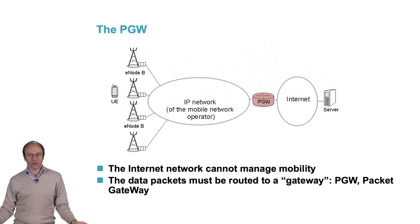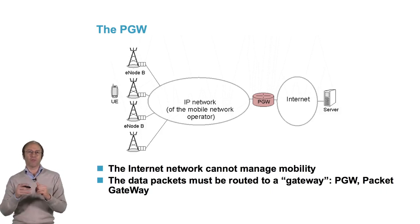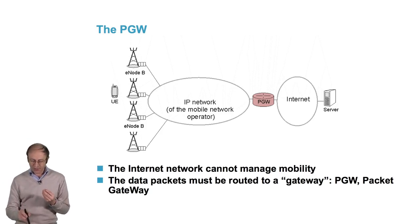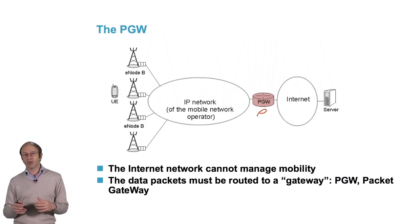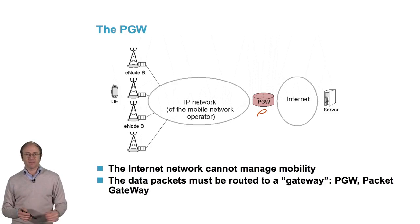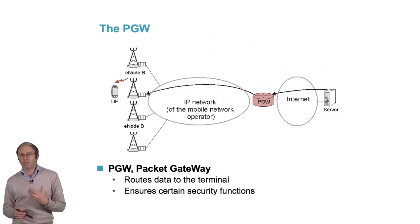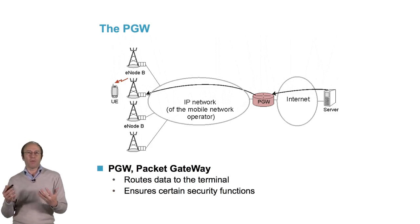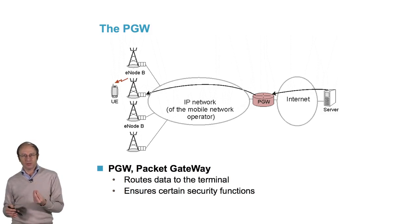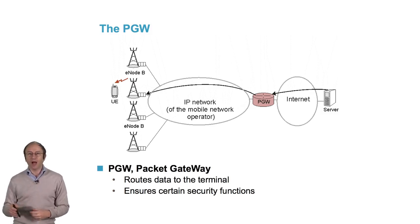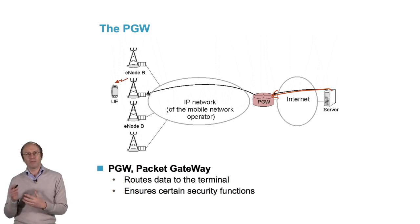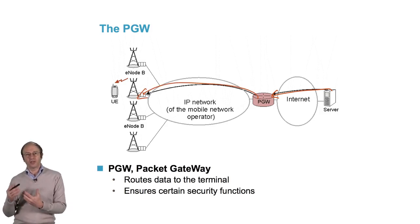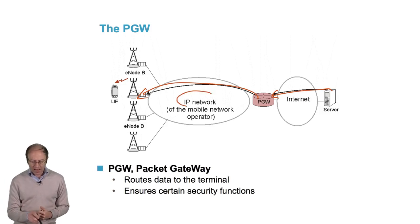The solution adopted for 4G networks was to converge packets destined for mobile subscribers to a single network gateway called the P-Gateway, or Packet Gateway. That means that when I consult a server, the packet constituting, for example, a piece of a website will be transmitted through the Internet to my mobile operator's P-Gateway, then from the P-Gateway to the base station using the mobile operator's own IP network.